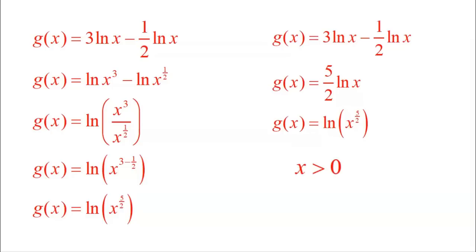One important thing to mention: I need to add the requirement that X must be greater than zero. That's because when I used the condensing rule to put X to the one half in the denominator — which is essentially a square root in a denominator — X must be positive and cannot be zero when it's in the denominator. So the final answer carries the restriction that X must be greater than zero.